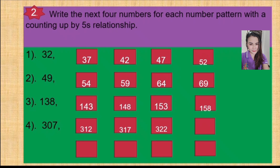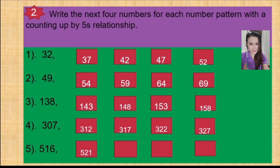322 counted up by 5 — cut your finger, let's check your answer — equals 327. Very good, you did very well! Next, number 5: 516 counted up by 5 — let's check the answer — it is 521. Very good! 521 counted up by 5, or 521 plus 5 — let's check your answer — it is 526. Wow, if you answered correctly, you are very good!